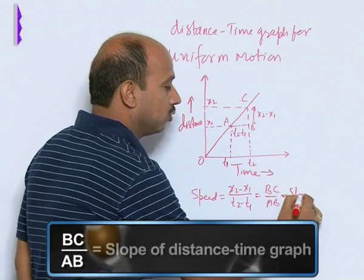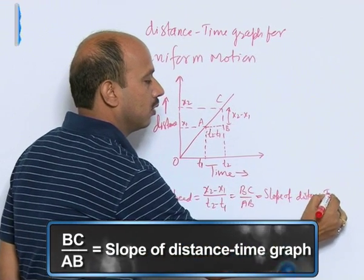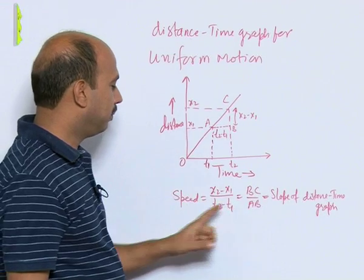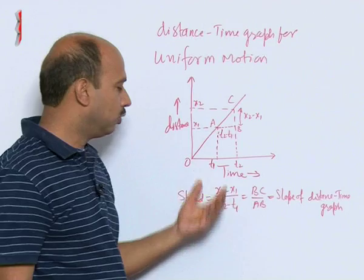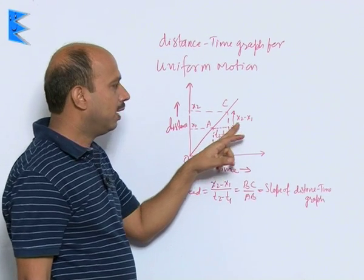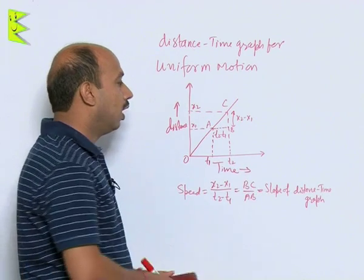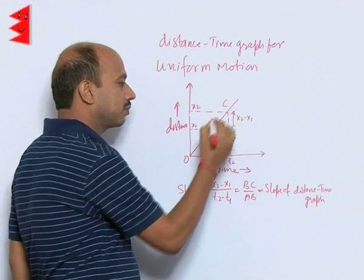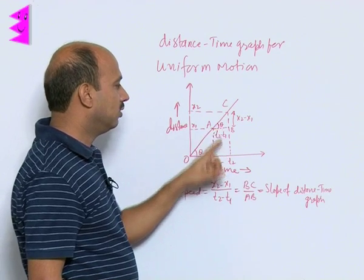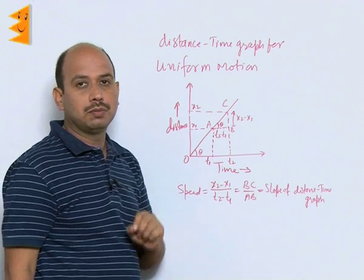This is the slope of the distance-time graph. So the slope of the distance-time graph represents speed. If the body is in straight-line motion, it can also be said to equal velocity. Here X2 minus X1 upon T2 minus T1 is the distance travelled from T1 to T2 seconds. We can also write this angle as theta, and since these two are parallel lines, this theta is also equal. So by calculating the slope, you can calculate the speed and velocity of the body.